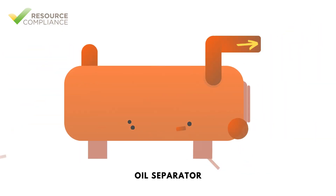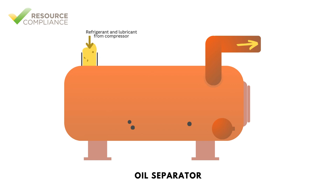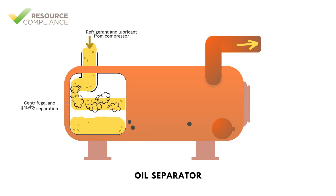Coalescing oil separators are widely used on screw compressors and provide superior separating capabilities. Coalescing oil separators are also vessels, but have two distinct sections. The first section receives oil-laden refrigerant from the compressor, where large droplets are allowed to drop out and collect at the bottom of the vessel.